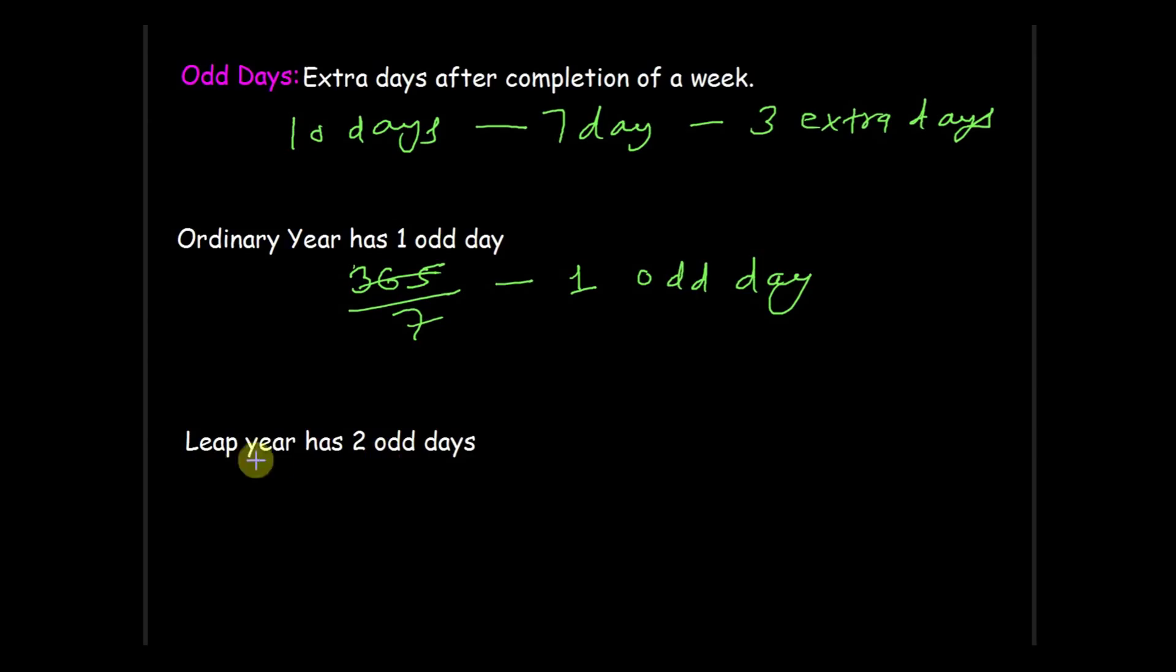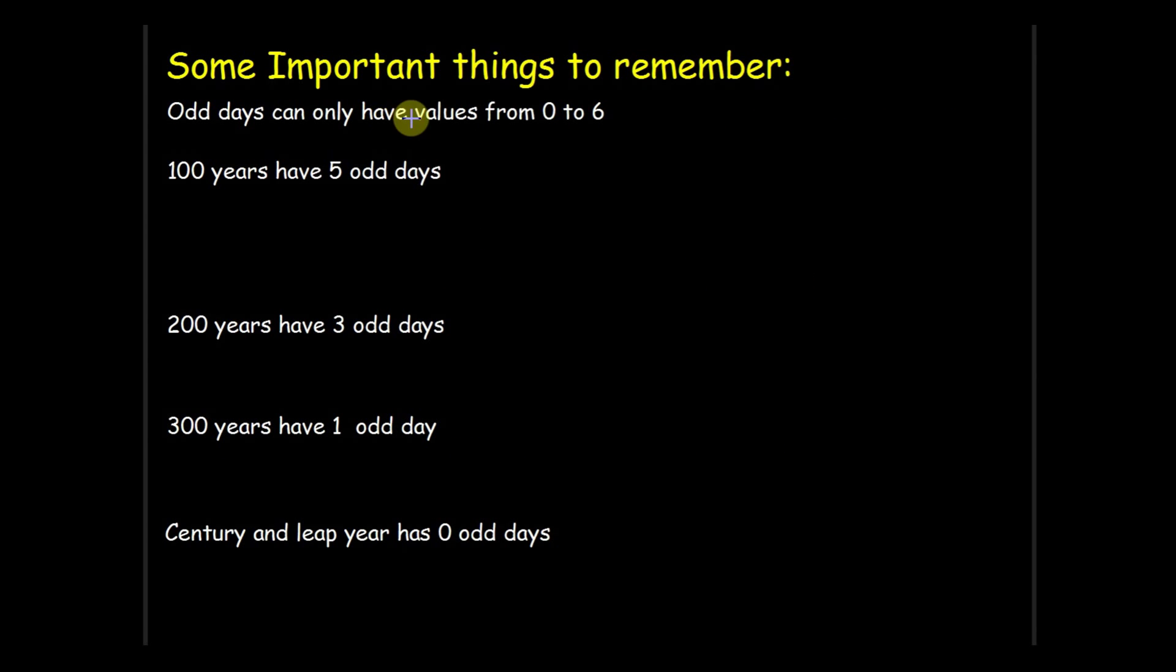Another concept is leap year has two odd days. As we know leap year has 366 days, so when we divide 366 by seven the remainder is two. So leap year has two odd days. Next one is odd days can have value from zero to six. Why? Because seven odd days together will become a week, so odd days values are possible till six.